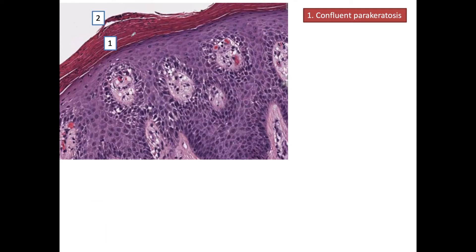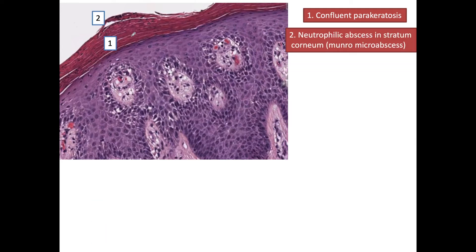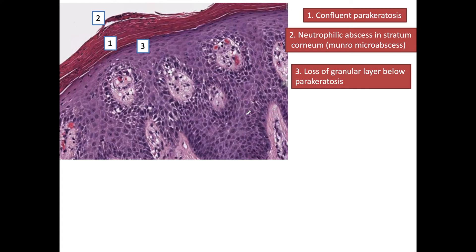The next feature is neutrophilic abscess in the stratum corneum — we can see neutrophils forming an abscess in the stratum corneum, which is called Munro microabscess. Micro abscesses can also be seen in the epidermis in the spinous layer, where they are called pustules of Kogoj. However, those micro abscesses are not seen in all cases of psoriasis.